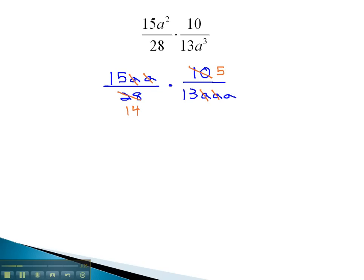With no more reducing left, in the numerator we've got 15 times 5, which we might need a little chicken scratch to calculate. 15 times 5 is 75.